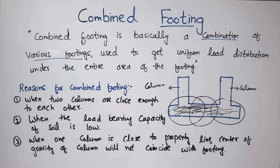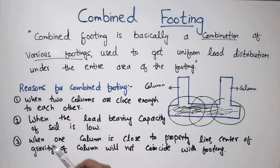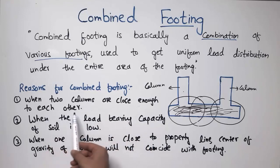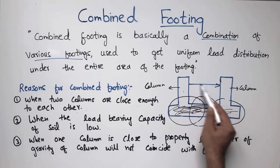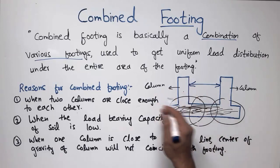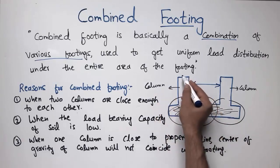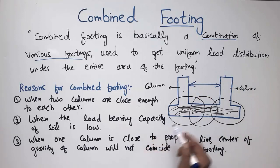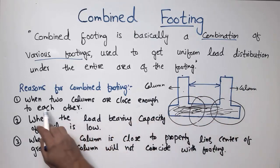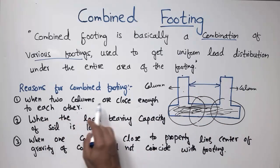There are three main reasons for providing a combined footing. The first reason is when two columns are close enough to each other — meaning the space between the columns is very small. In that case, you combine the footings of both columns to form a combined footing.